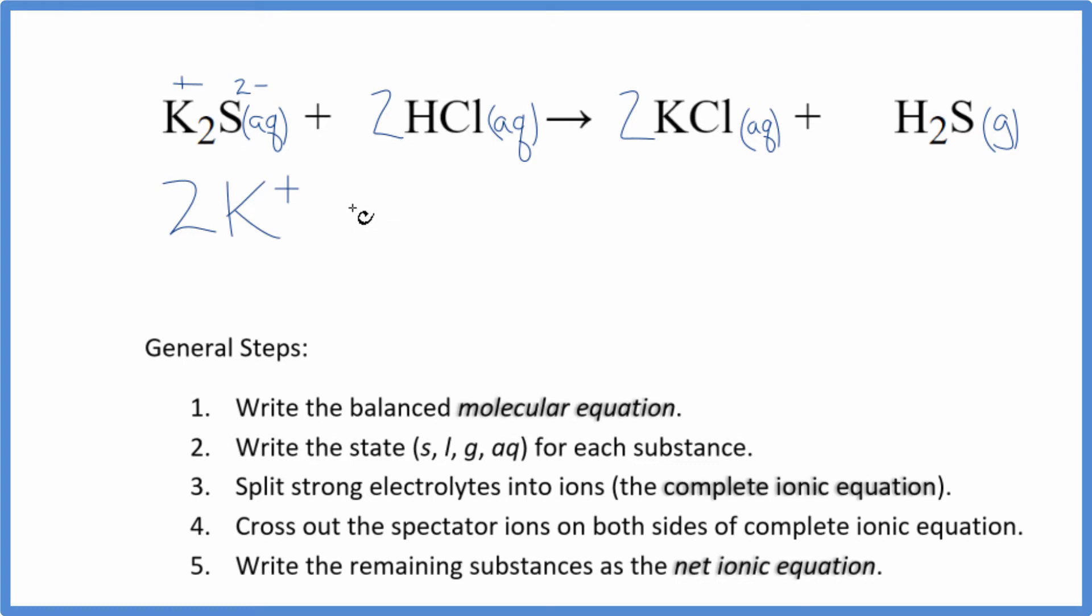I'll write aqueous later. Plus the sulfide ion, S 2 minus. And then hydrogen group 1, 1 plus chloride ion. There's the 1 minus, 2 hydrogen ions. And that 2 goes to everything so we have 2 chloride ions as well. And these are the reactants in our net ionic equation.